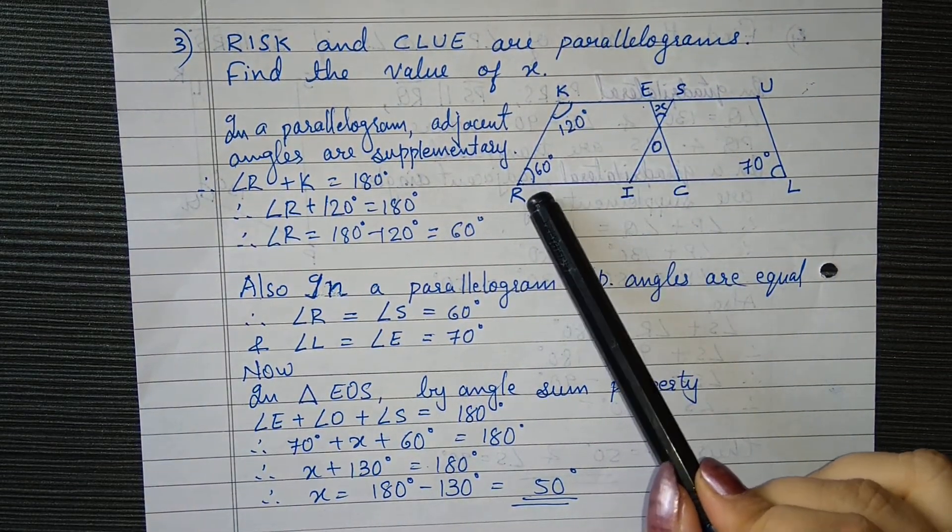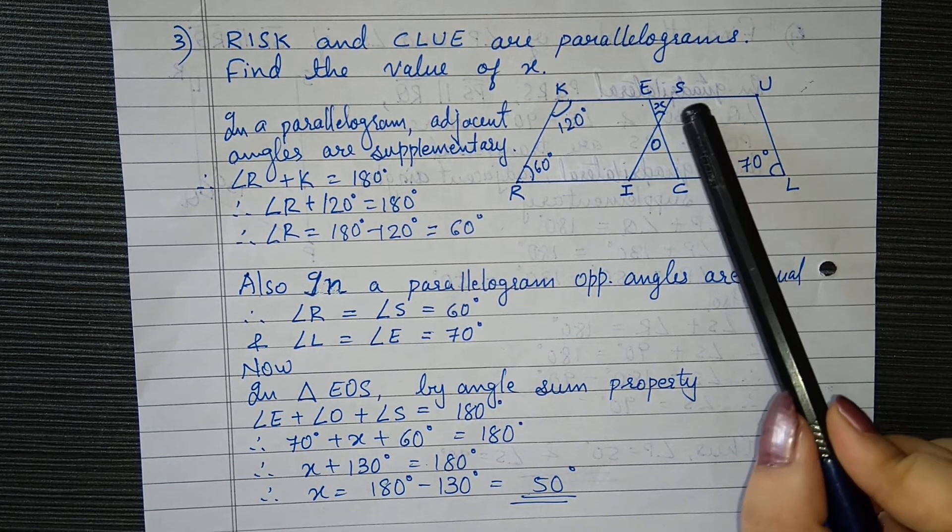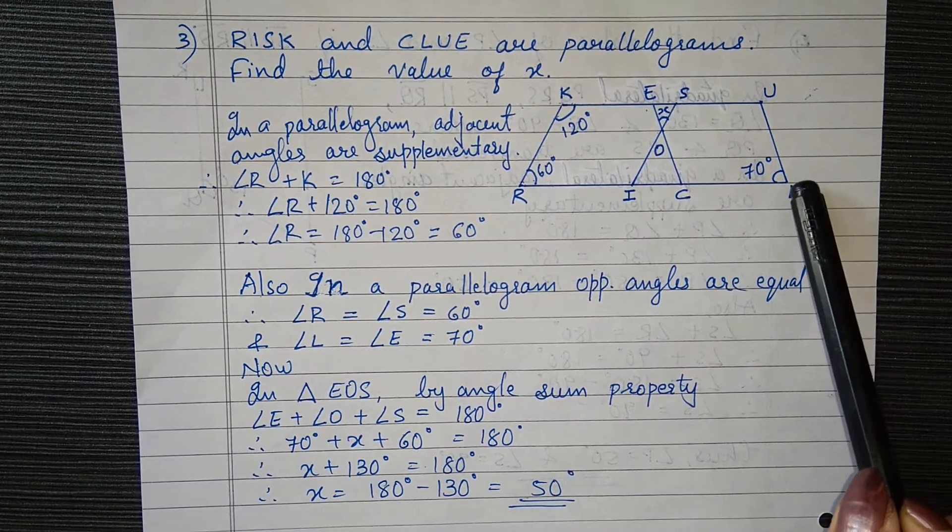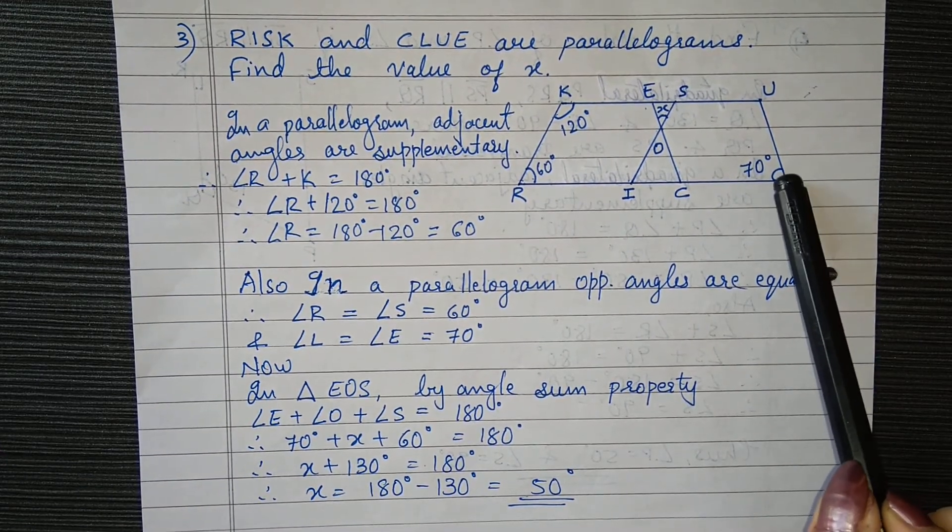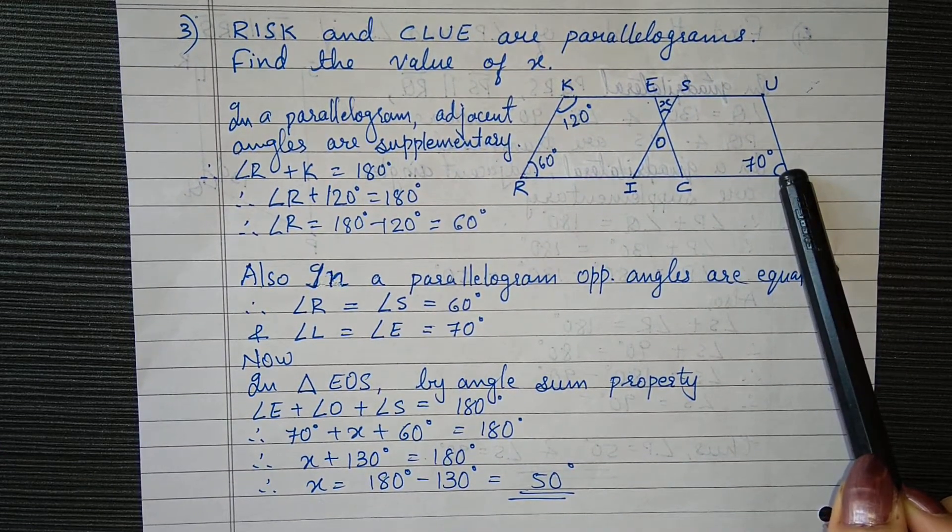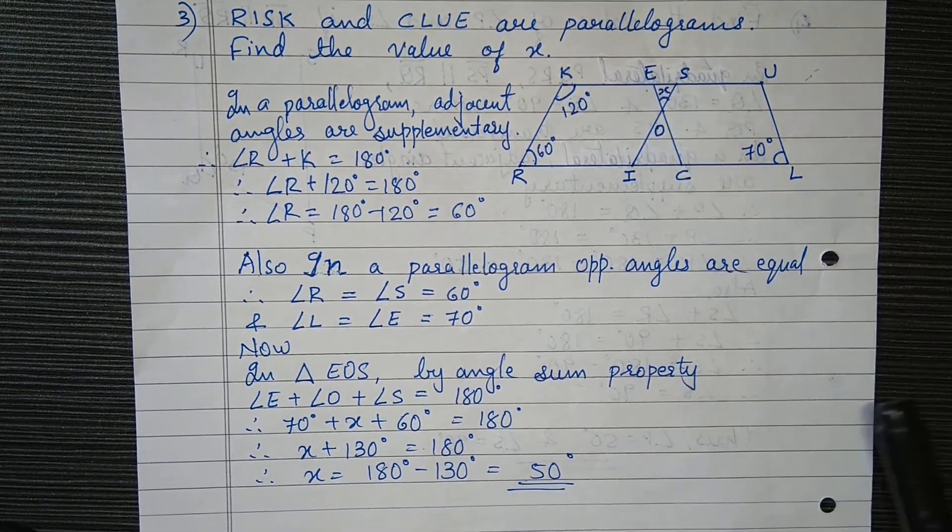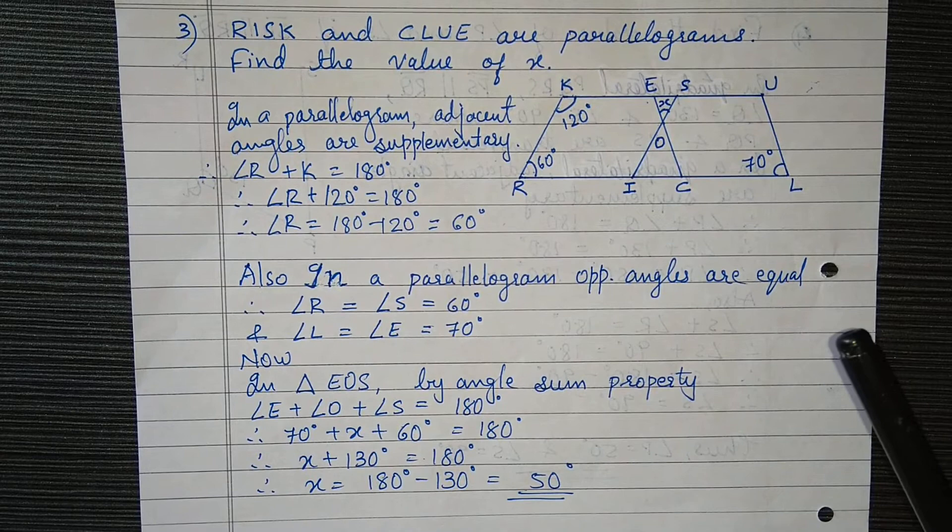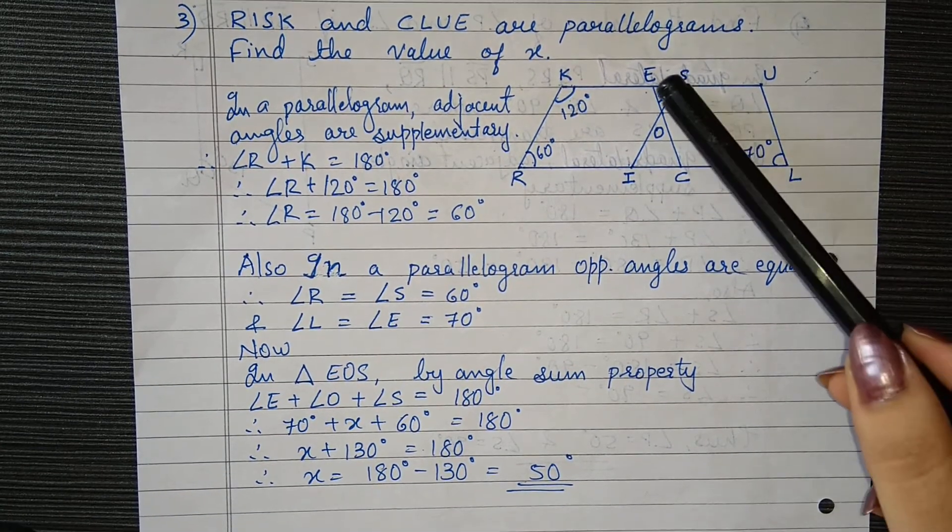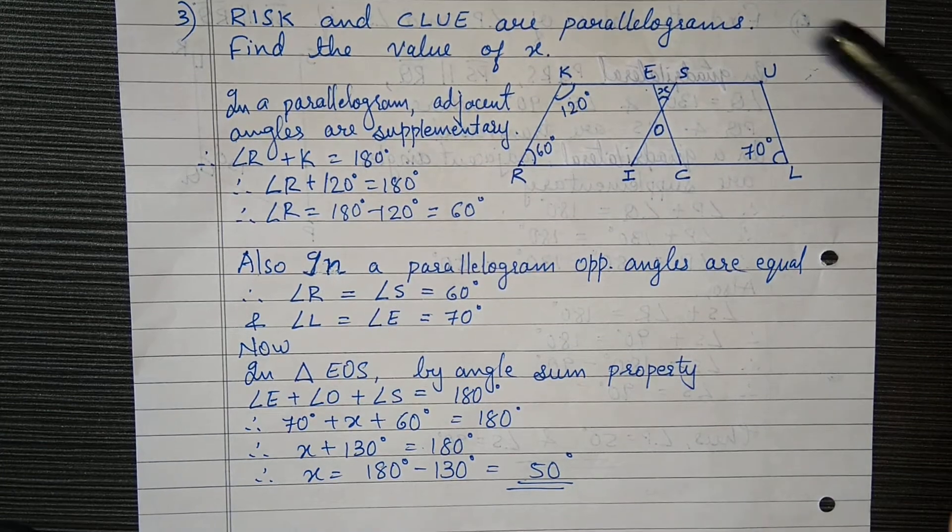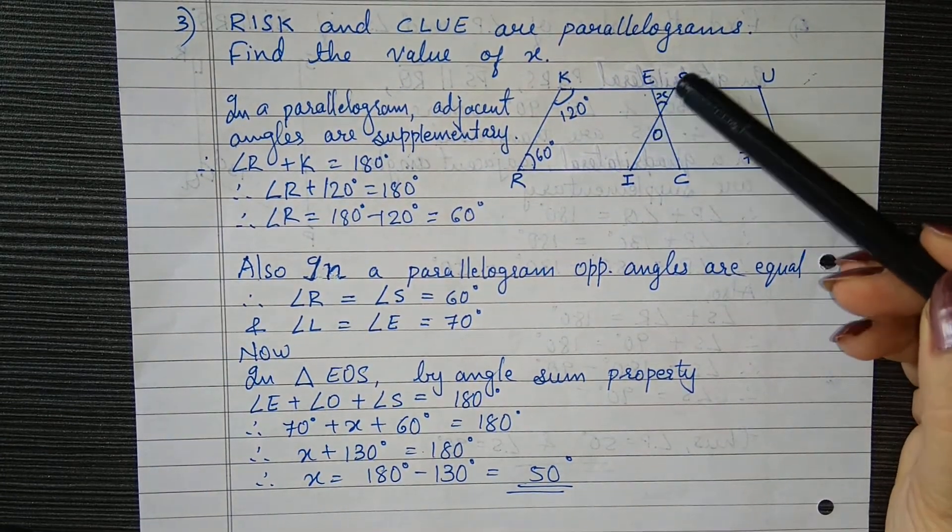Now, in a parallelogram, opposite angles are equal, so angle R equals angle S. So angle S is also 60 degrees. And taking this parallelogram, angle L is 70 degrees. Here also, angle L and angle E are opposite angles which are equal, so angle E will also be 70 degrees.